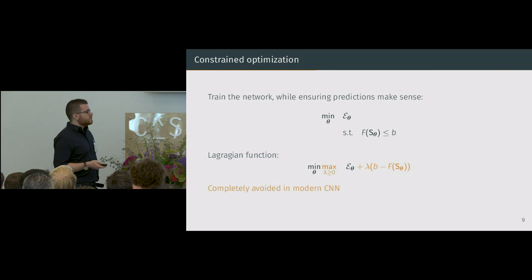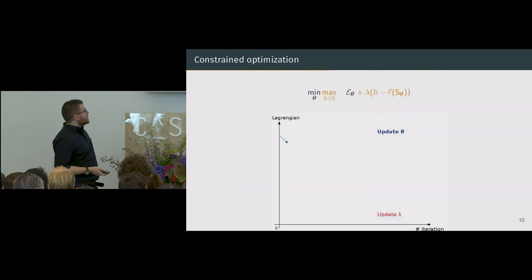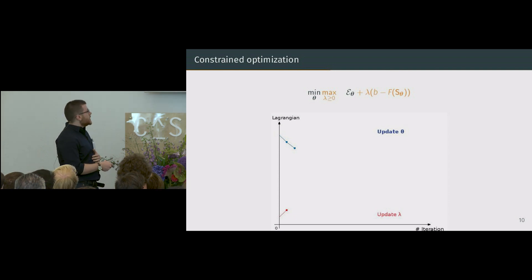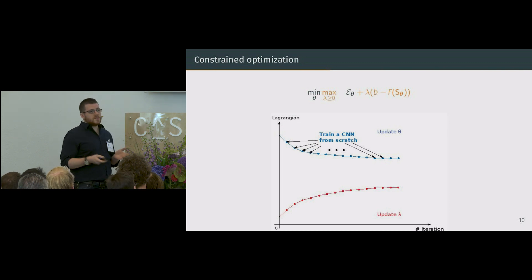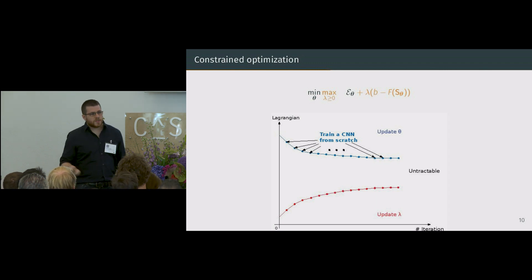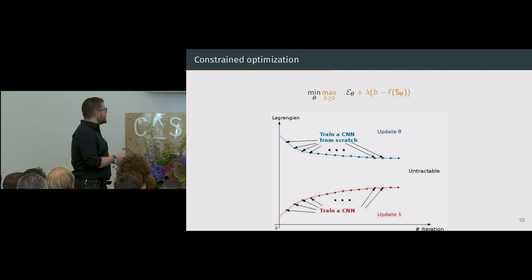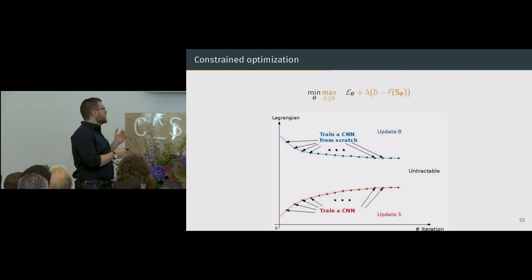In modern neural networks, Lagrangian optimization is completely avoided, because the usual way to solve it requires an alternating scheme: first update the network parameters, then update lambda, and so on until convergence. But each iteration of this means training a CNN from scratch — a complete stochastic gradient descent on the whole dataset several times — which is of course untractable for time reasons.